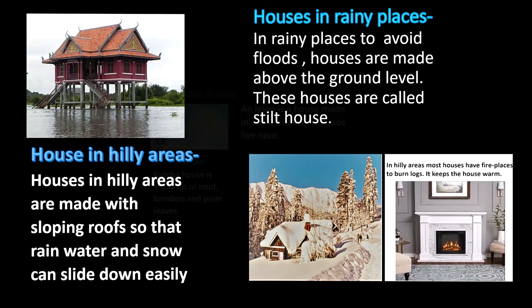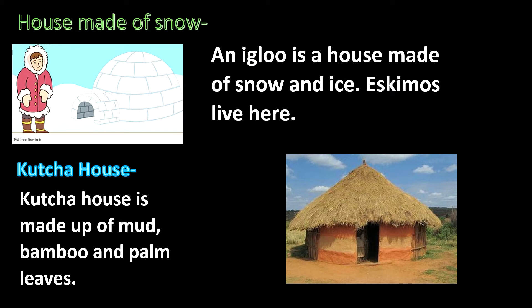In very cold regions, houses are made of snow or ice. These houses are called igloos. The people who live in these houses are called Eskimos.